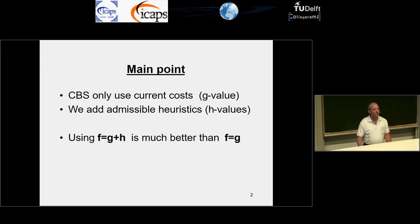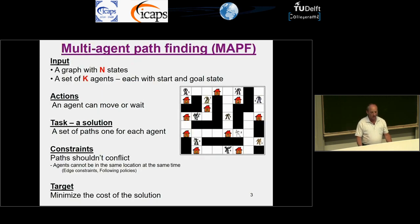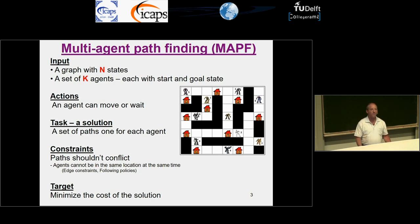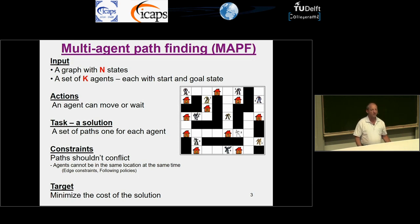Let's show some more details. The multi-agent pathfinding problem is defined on a graph and there is a set of K agents. Each of them has a start state and a goal state. We discretize the time, and at each time step an agent can either move to an adjacent location or wait at its current location. The task is to find a solution which is a set of paths, one for each agent, such that paths do not conflict. The most basic definition is that agents cannot be in the same location at the same time, though there are more sophisticated definitions.